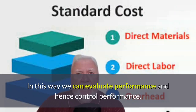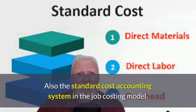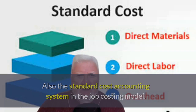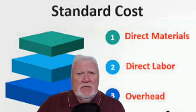In this way we can evaluate performance and hence control performance. Also, the standard cost accounting system in the job costing model — we can now set the amount of standards for direct labor and the standards for direct material.